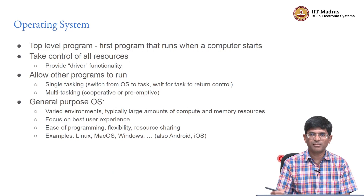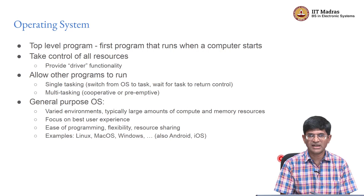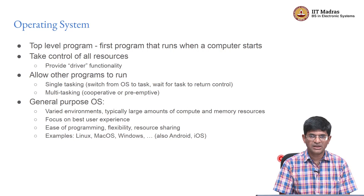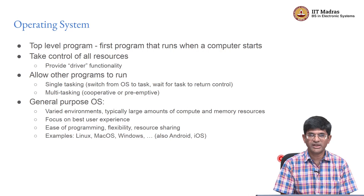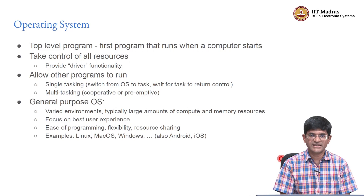That means we need some kind of a manager — something that can decide how these resources are split up and used across all the different tasks that a system needs to perform. And that is where the operating system comes in. It is important to understand that an operating system is strictly speaking optional. You do not absolutely require an operating system for a computer to work, unlike a power supply or memory. It is possible to write programs directly that execute on the computer and do useful work without using an operating system.